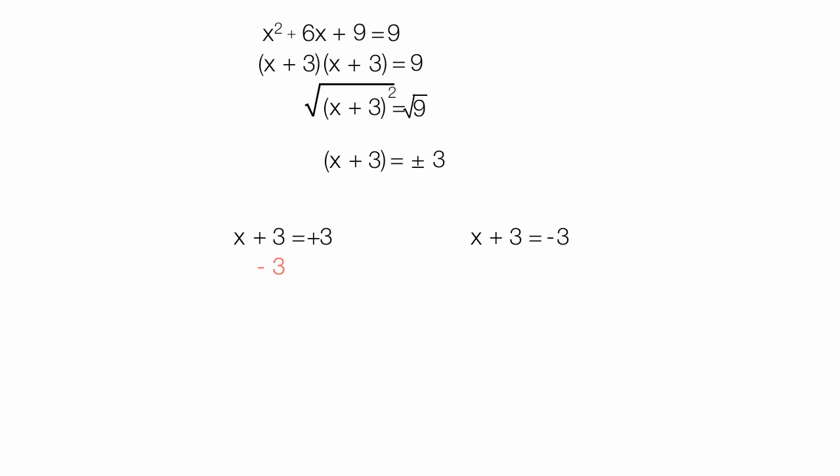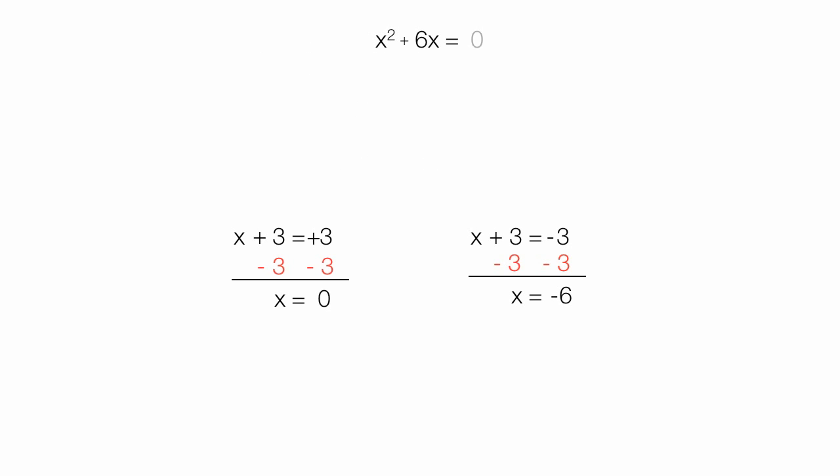I solve for x, so I subtract 3 from both sides of the equation. I subtract 3 from the second equation, which gives me x is equal to 0 for the first one. I subtract 3 from the second equation as well, which gives me x is equal to negative 6. So if I plug either one of these values into the initial equation, it's going to equal to 0. So I have two solutions.